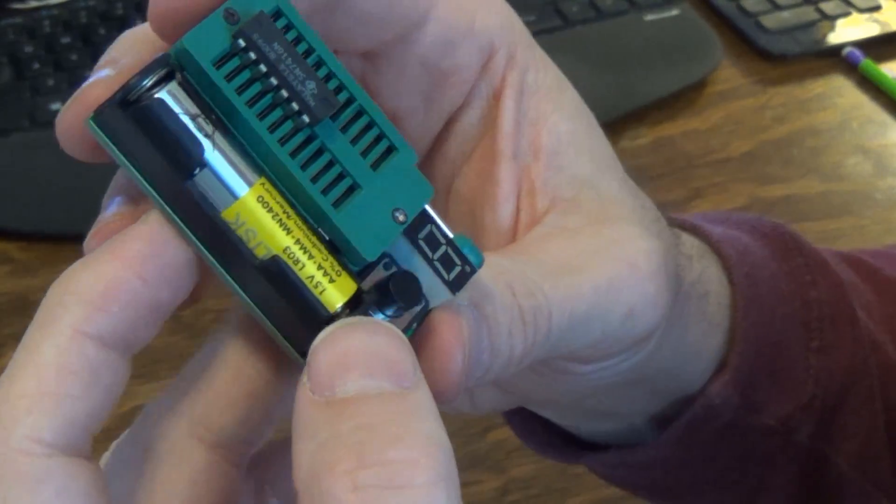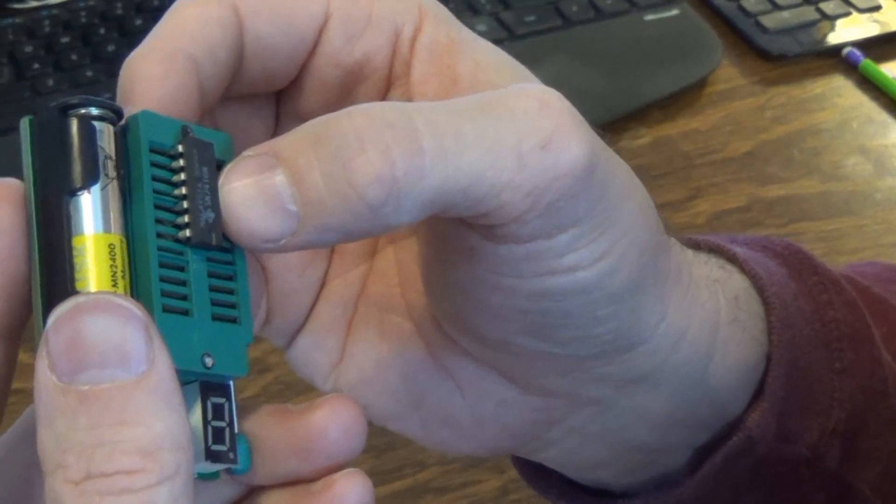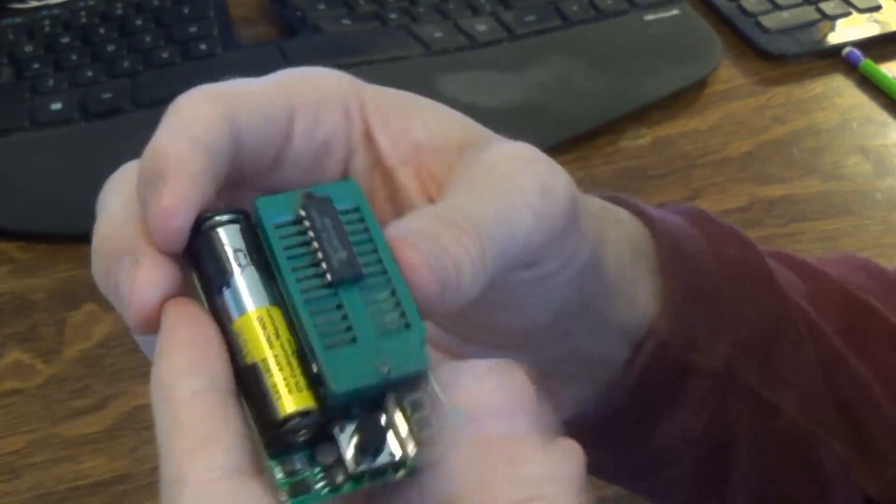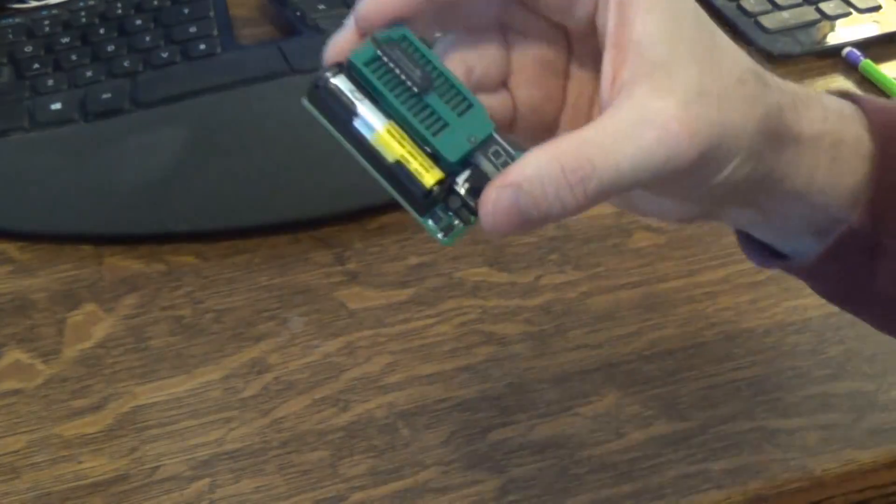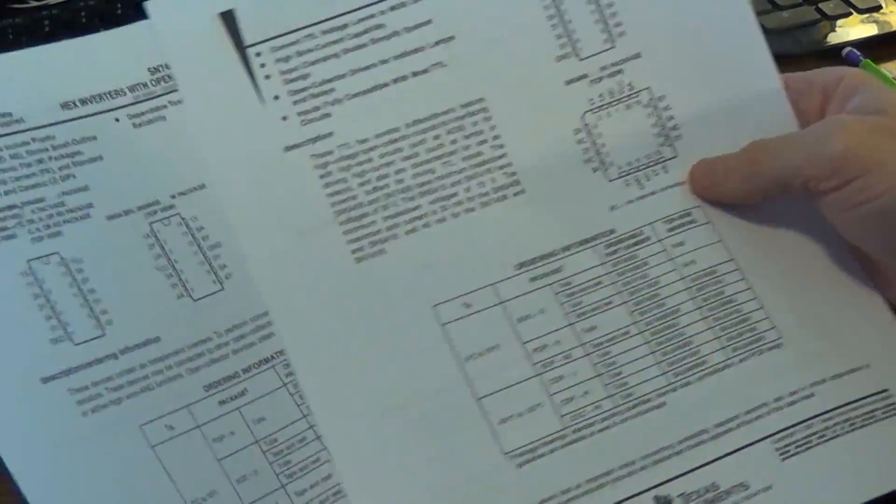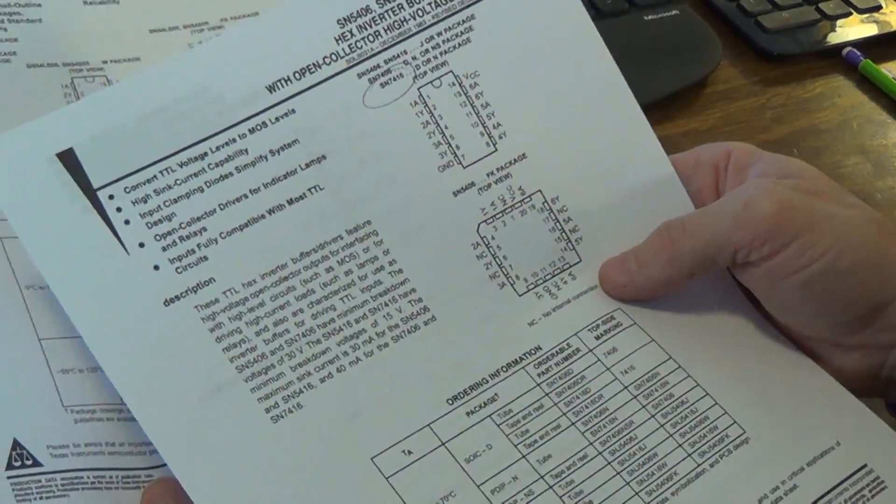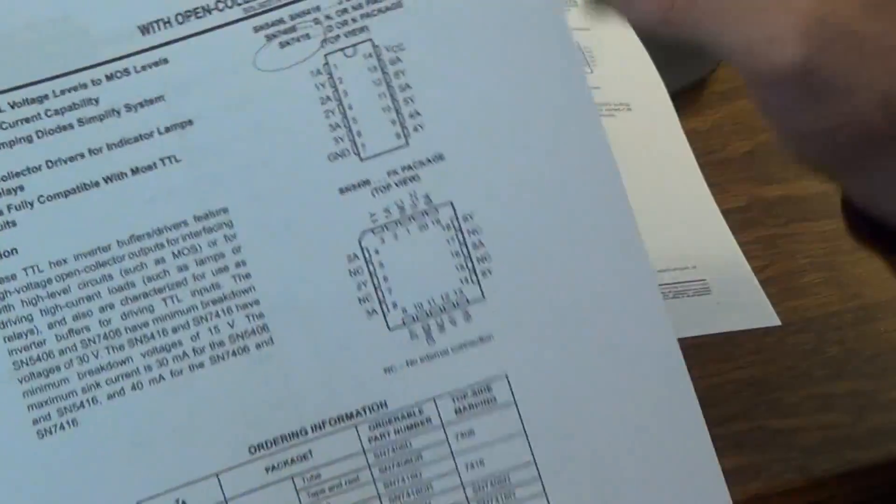Interesting. 74-05. So it's basically telling me it's a 7405 when the chip actually reads 7416. Well, does that make sense? Well, I scratched my head about that. Yes, I tested that before I showed you. And I went ahead and downloaded the data sheets for both of these.